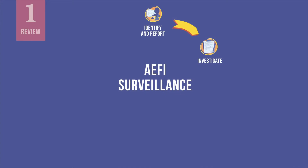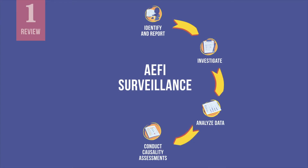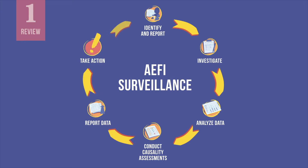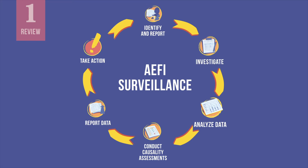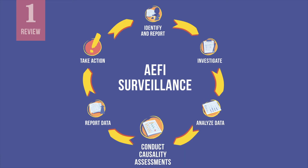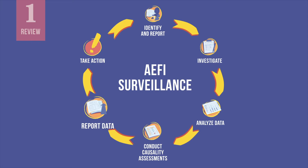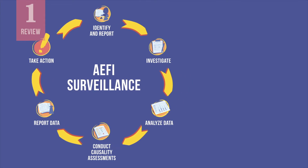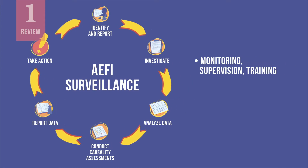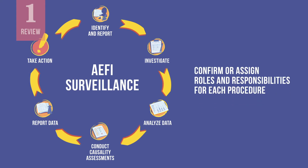First, you will need to review established AEFI surveillance procedures. There should be clear guidelines in place at both the health facility and district level for each phase of AEFI surveillance: identifying and reporting AEFIs, investigating AEFIs to collect data, analyzing that data, conducting causality assessments if it is the district's responsibility, reporting data to the national expert committee, and taking corrective and preventive action. Also ensure guidelines are in place for AEFI monitoring, supervision and training, and public education and communication. Make sure that staff know their roles and responsibilities for each procedure.